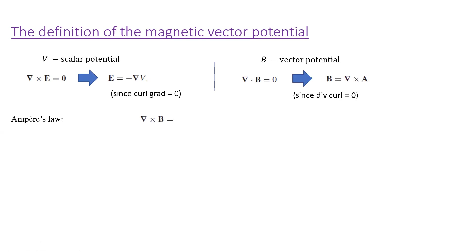What are some properties of A? We can start with Ampere's law: del cross B equals mu-naught J. Substituting in the curl of A, so the curl of the curl of A, we use a vector identity — listed in our textbook — which says that the curl of the curl of a vector is the gradient of the divergence of the vector minus the Laplacian of the vector. And that's supposed to be equal to mu-naught J.